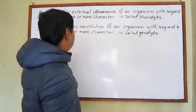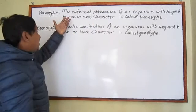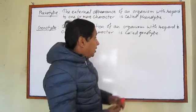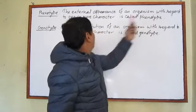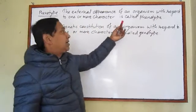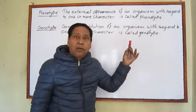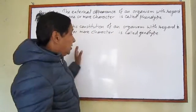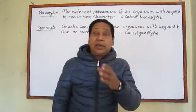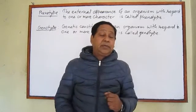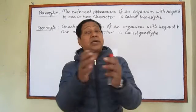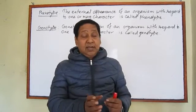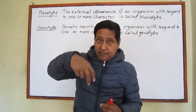Phenotype is defined this way: the external appearance of an organism with regard to one or more characters is called phenotype. The next term is genotype. Genotype means what kind of genes it has. Genes always lie in pairs.